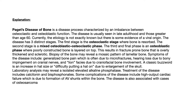Laboratory analysis might reveal an isolated elevated alkaline phosphatase. Treatment for Paget's disease of the bone includes calcitonin and bisphosphonates. Some complications include high output cardiac failure — a very high yield association — due to the formation of AV shunts within the bone. The disease is also associated with osteosarcoma.